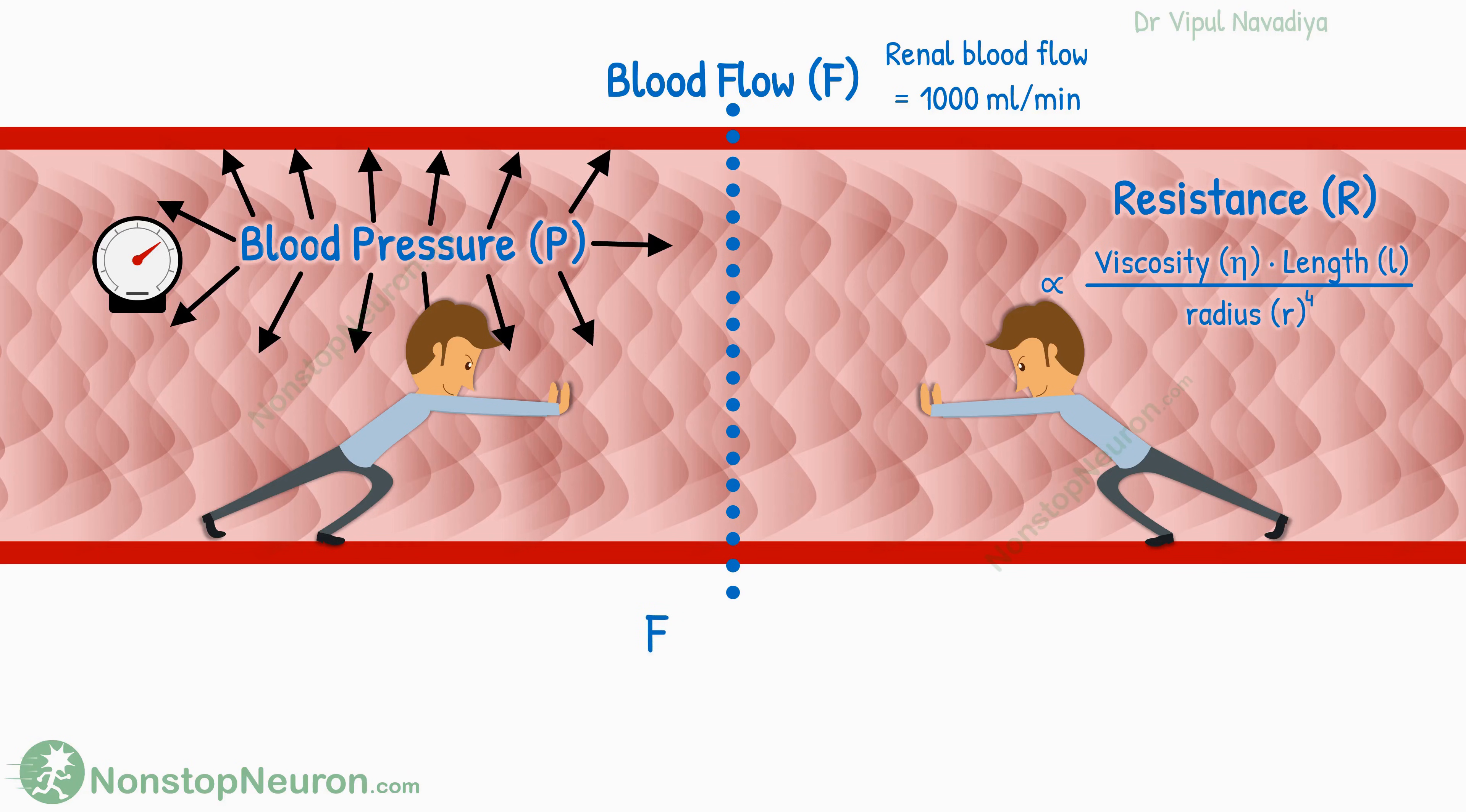Here, the flow is equal to the pressure gradient, divided by resistance. So what this formula is really trying to tell you?